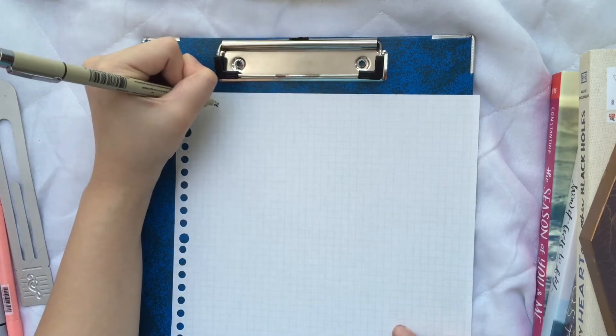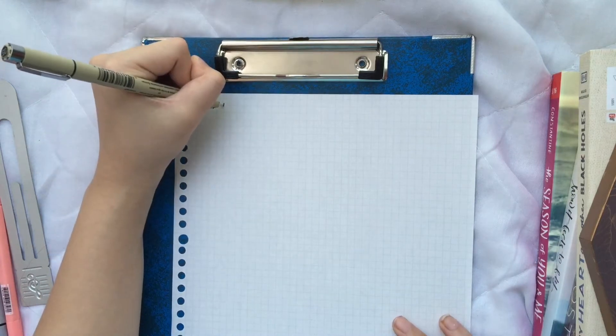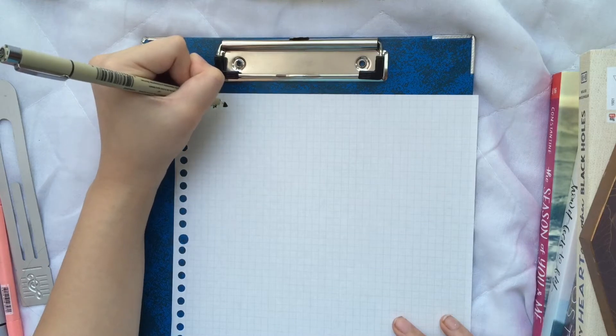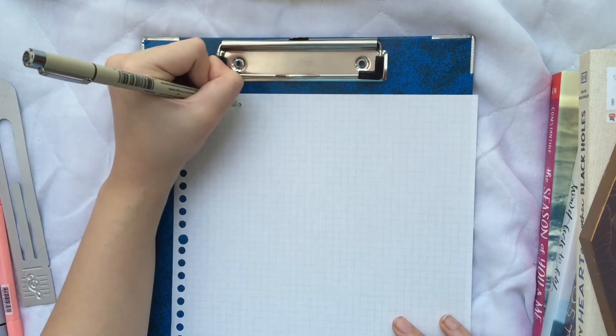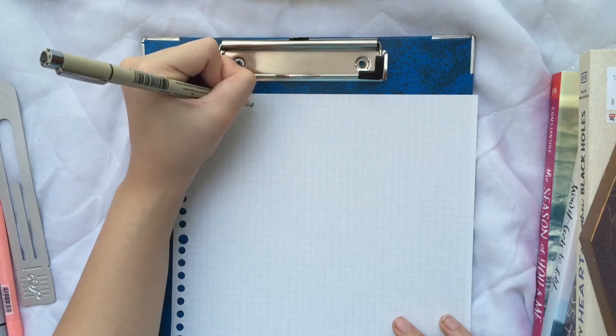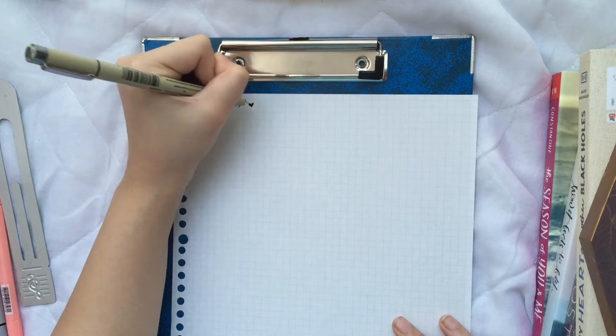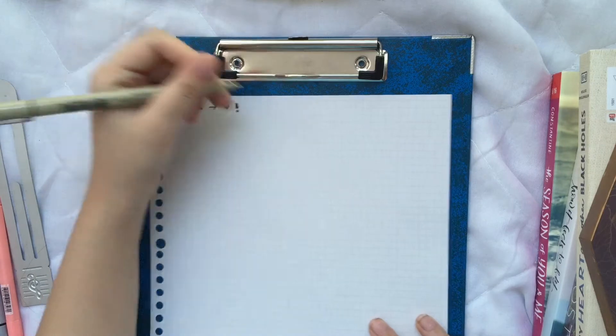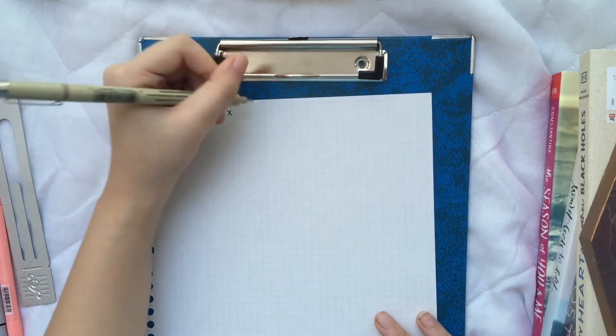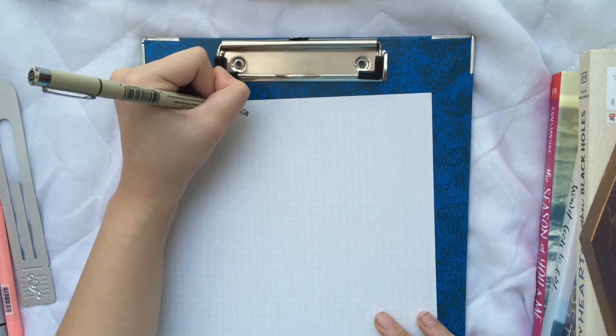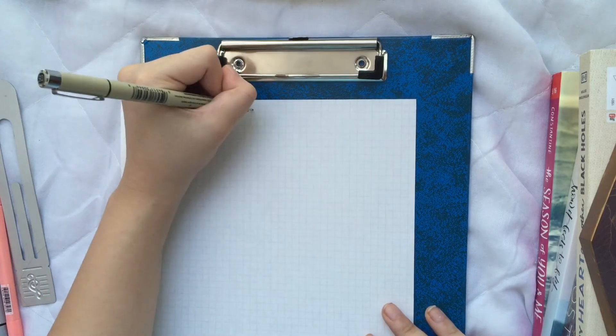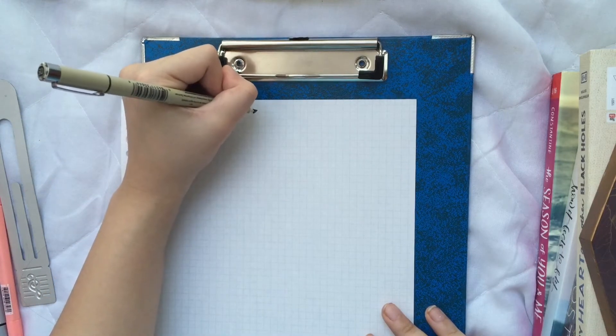So these are the various bullets that you can use in your notes or bullet journal. A heart, an exclamation point, an X, a flower, this line, an inverted triangle.